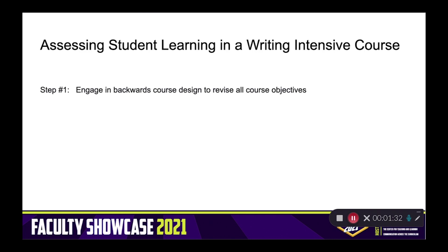We focused on two steps in improving the assessment of student learning in this writing intensive course. Step one was engaging in the very difficult work of revising our course objectives. We engaged in backwards course design to revise all the course objectives. The first thing we had to recognize was that while we were delivering effective direct instruction to support the mastery of skills in this class, we were falling short of providing direct instruction and supporting activities and assignments for writing in this course. We were assuming that the students already had the skills to succeed on high-stakes writing assignments. We were wrong.